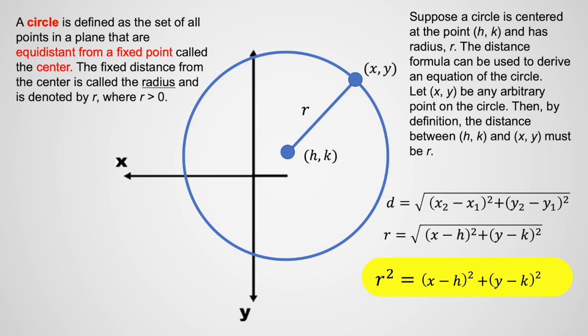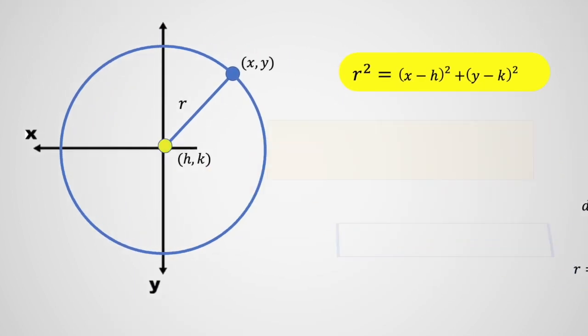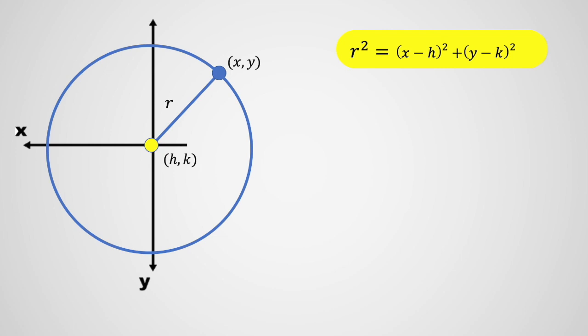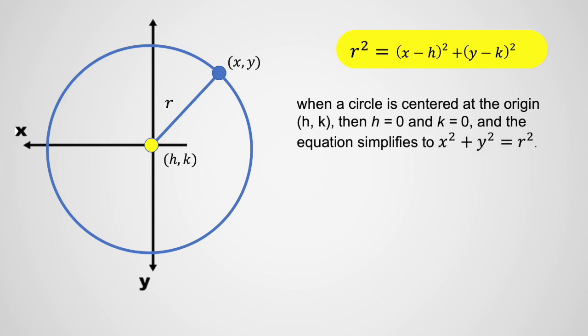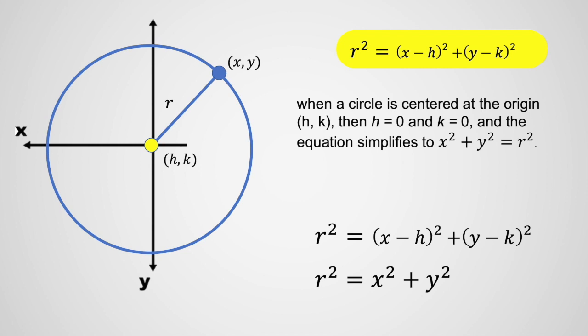When a circle is centered at the origin, h equals 0 and k equals 0, and the equation simplifies to x squared plus y squared is equal to r squared. So we now have the two standard equations: r squared equals x minus h quantity squared plus y minus k quantity squared, and if the center is the origin, r squared equals x squared plus y squared. Those are the standard equations of a circle.